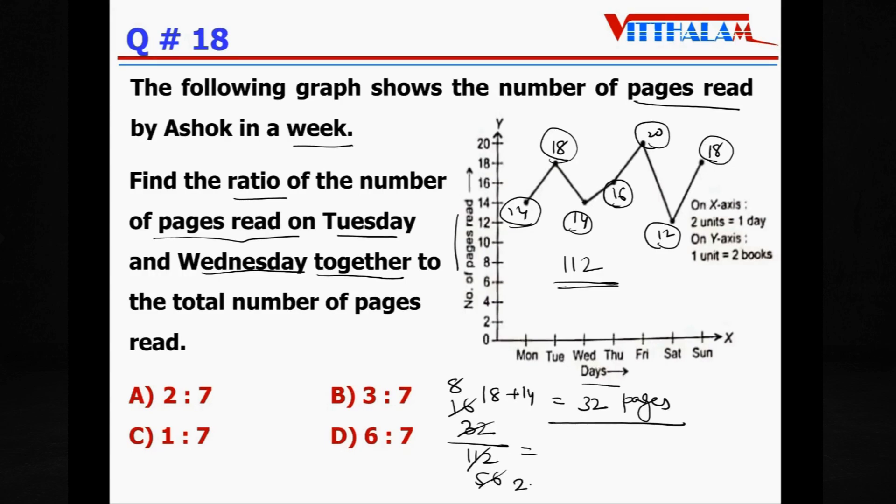Therefore ratio is 32 by total 112. So 16, 2s are, and 5, 6, 8, 2s are 16 and here it is 28. Now 4, so 4, so 4, 2s are 8 and 7. Therefore 2 is to 7. Both are prime numbers, the HCF is 1 only, so it's in the simplest form. So 2 is to 7, answer is A.